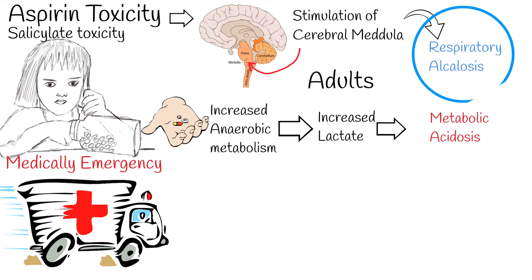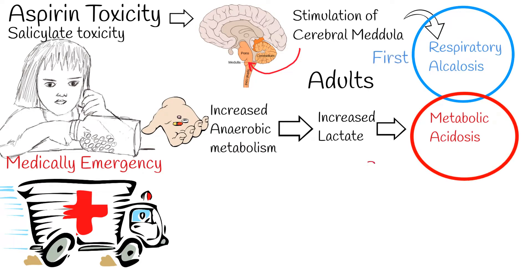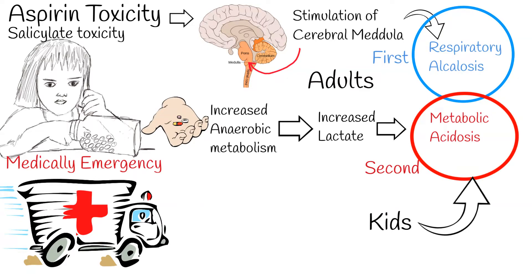Eventually, the patient fatigues and is no longer able to compensate via hyperventilation, and metabolic acidosis prevails. This results in hemodynamic instability and end-organ damage. In children, unlike adults, a mixed metabolic acidosis and respiratory alkalosis does not commonly develop; instead, an increased anion gap metabolic acidosis is presented.